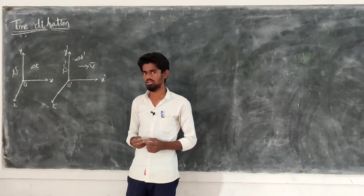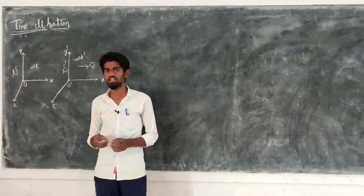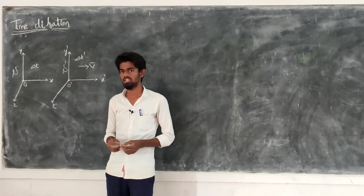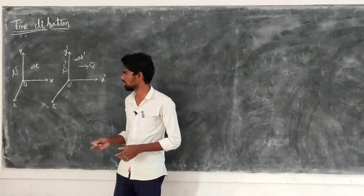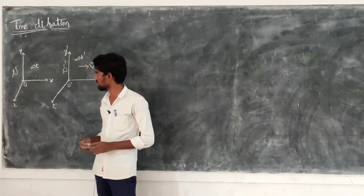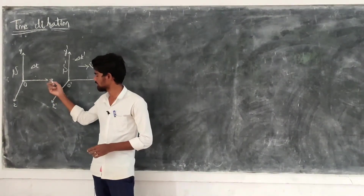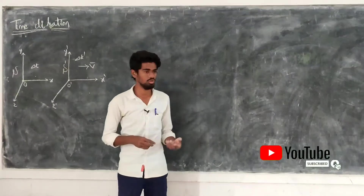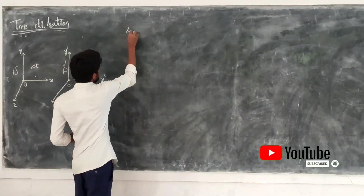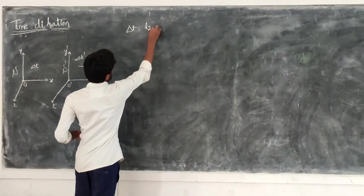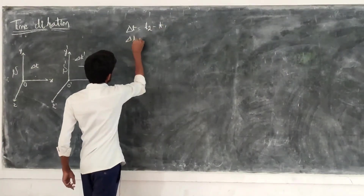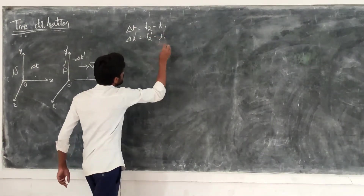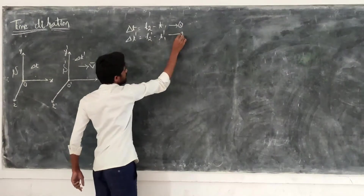S' moves with velocity V. Now we consider an event. Delta T' is equal to T2' minus T1' — this is equation number 1. This is equation number 2.